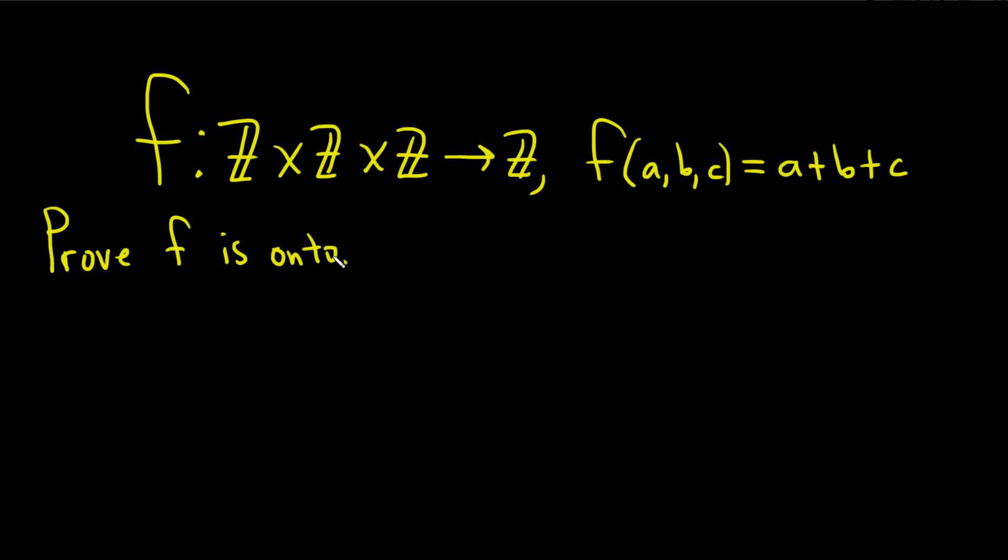So before we do the proof, we definitely should recall what it even means for a function to be onto. That's what this proof is all about. So we'll say a function f from A into B is onto, or surjective, if for all little b in capital B, which is the codomain. So this is our capital B in this problem here.